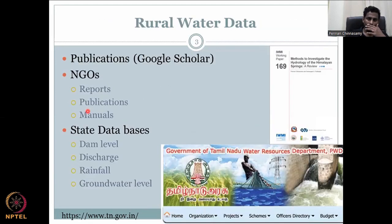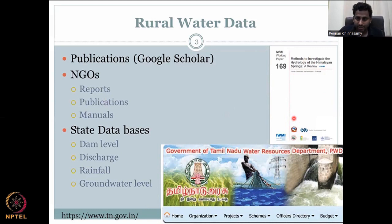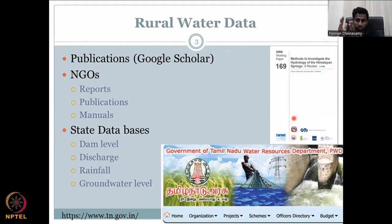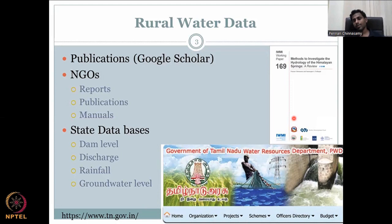Before moving to state databases, I want to show one example of an NGO report. Inside such a report, you find a lot of government archived data. Similarly, the scientific community writes proposals, collects data, analyzes it using a scientific team, and puts it in websites or books. These books are essentially open source — stored as PDFs that can be shared with everyone. Research Gate is one database for papers and publications; Google Scholar, as I mentioned, also has all these publications.